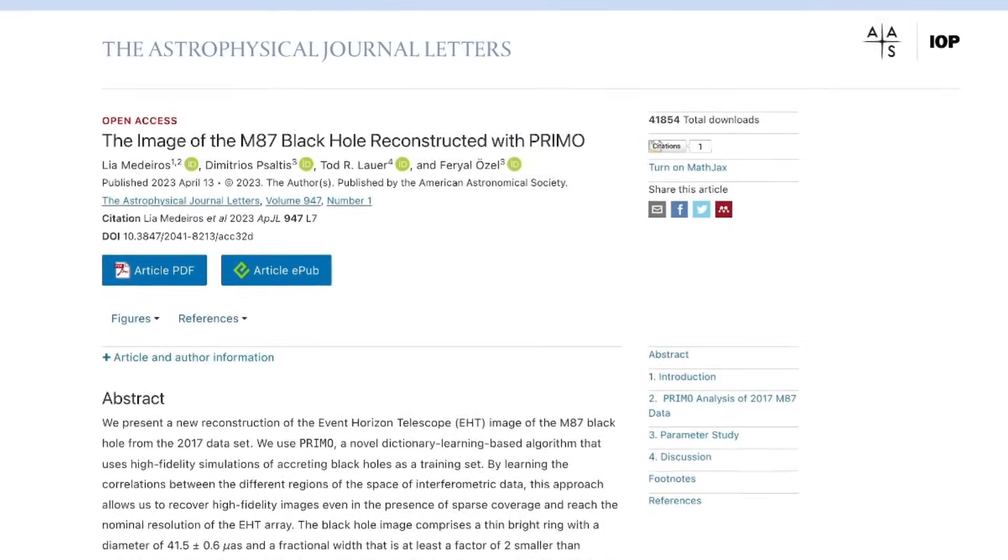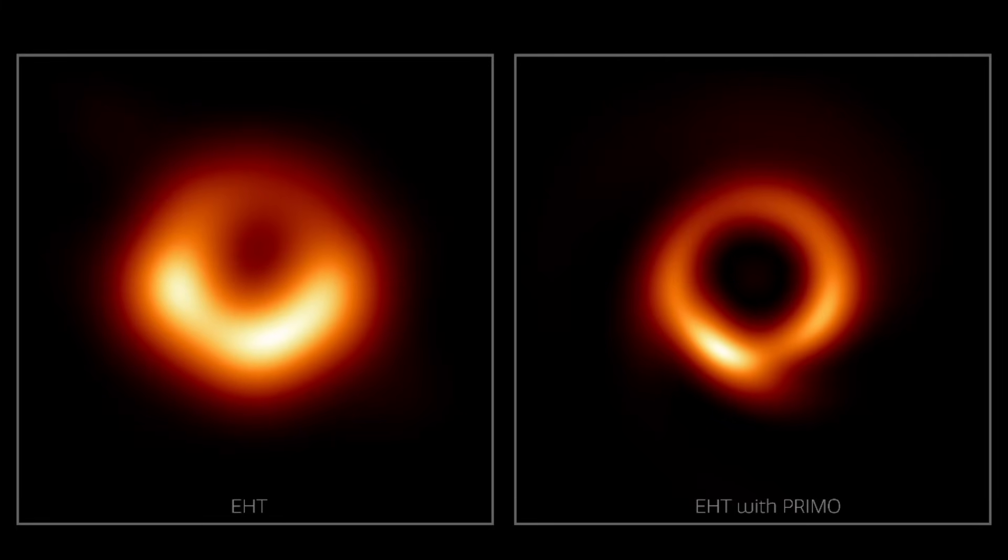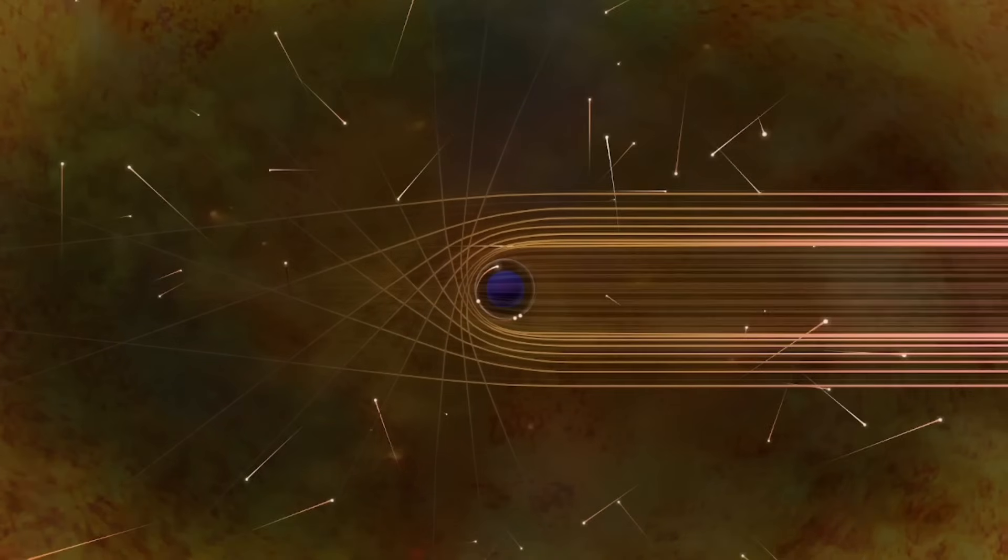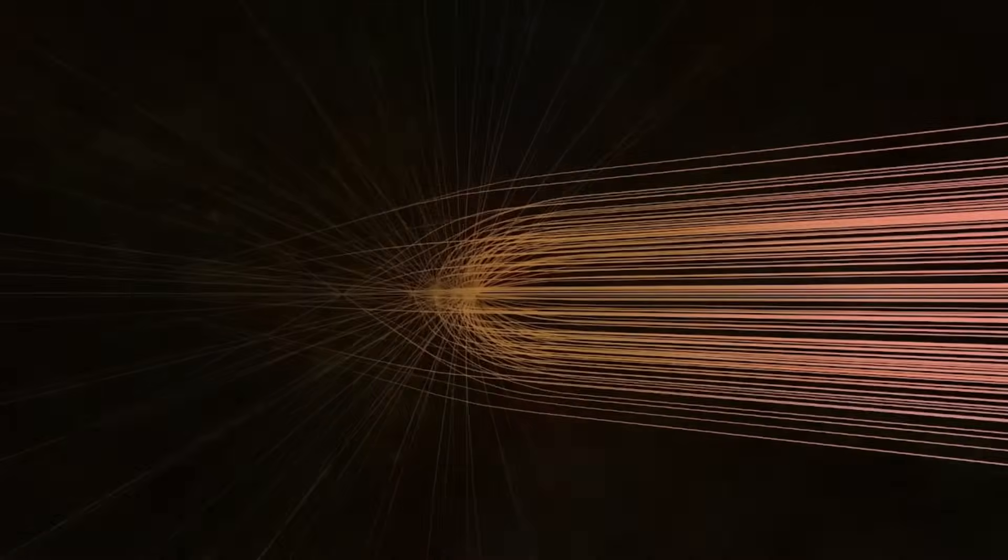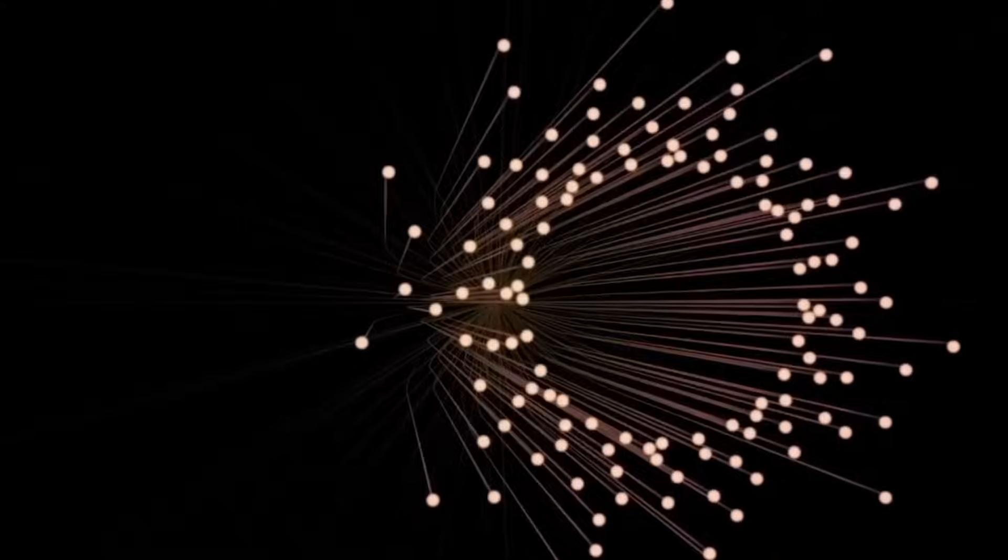We're jumping straight to the heart of the matter, a quantum artificial intelligence trained on Hawking radiation profiles, gravitational lensing maps, and accretion disk simulations has created an image unlike anything produced by a telescope.